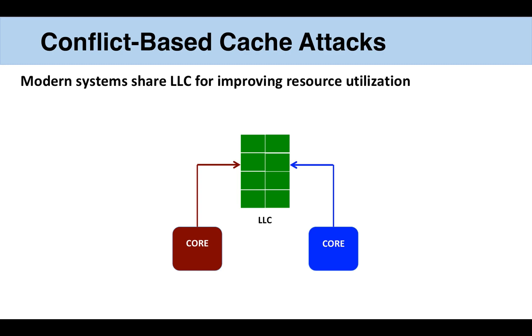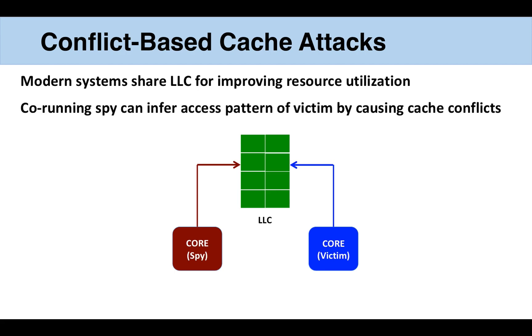Modern systems share the last level cache to improve performance. Unfortunately, this can also allow an application to infer the access pattern of a co-running application by causing conflicts.